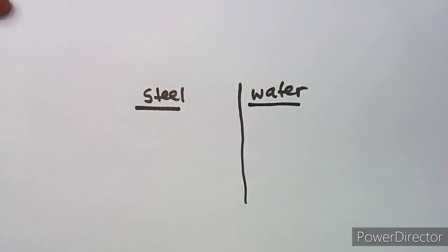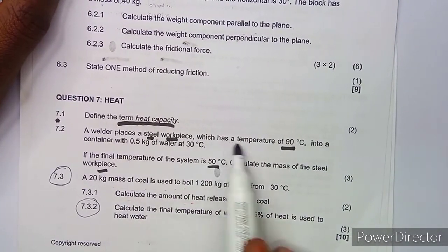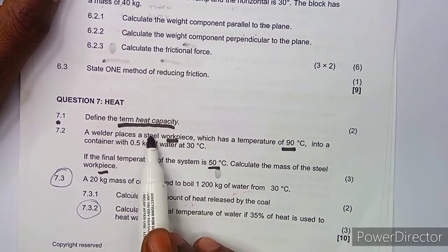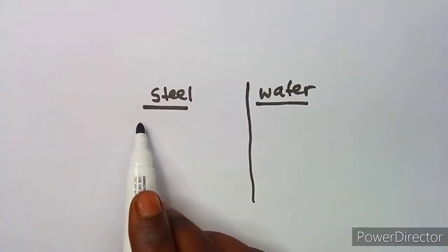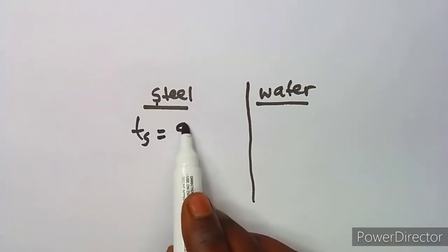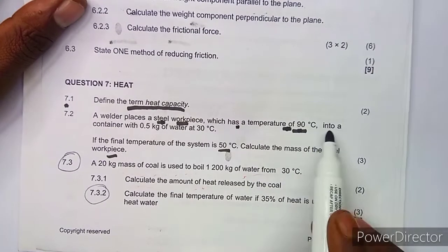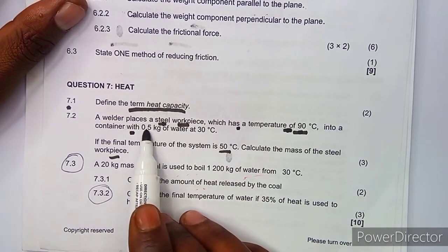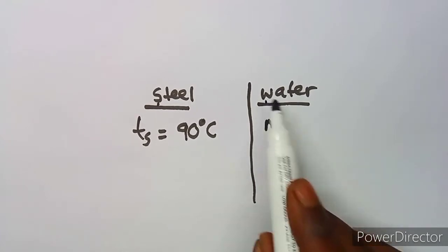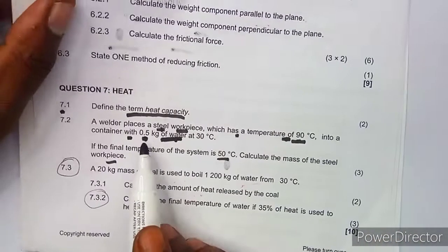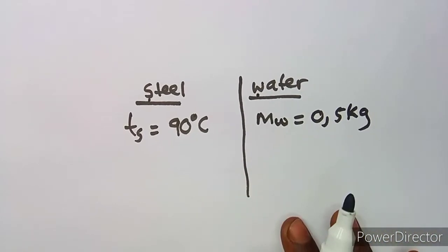Let's take the information for each. The temperature of the steel, which I'll write as Ts, is 90 degrees Celsius. The mass of water, which I'll write as mw, is 0.5 kg.